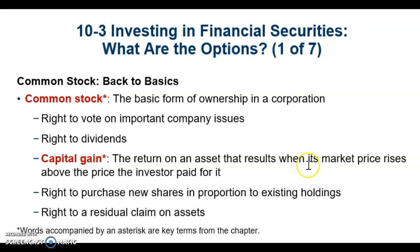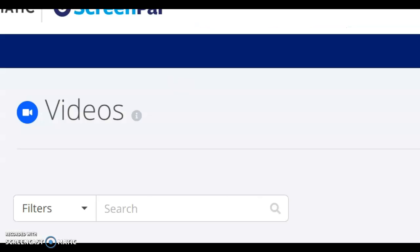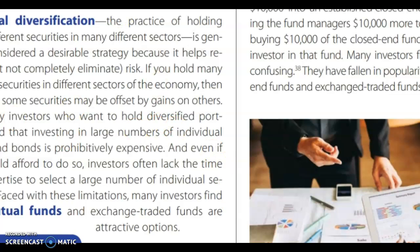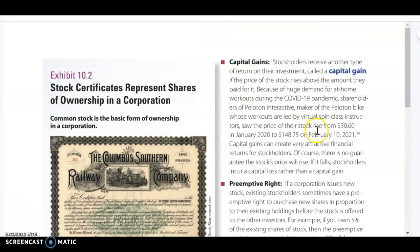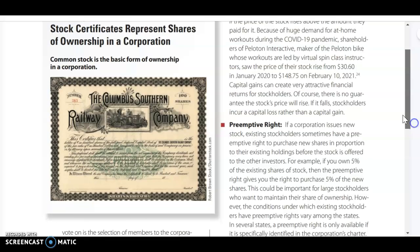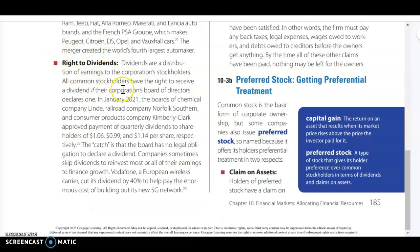With common stock, you have the right to vote on important company issues and the right to dividends. When you invest and get common stock, you're going to have voting rights, and that's one thing that preferred stockholders don't have. Common stockholders have the right to dividends, but they receive them after preferred stockholders get their dividends.